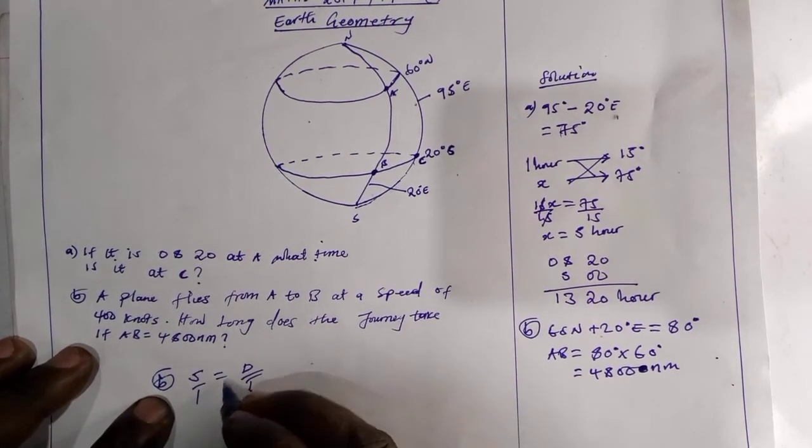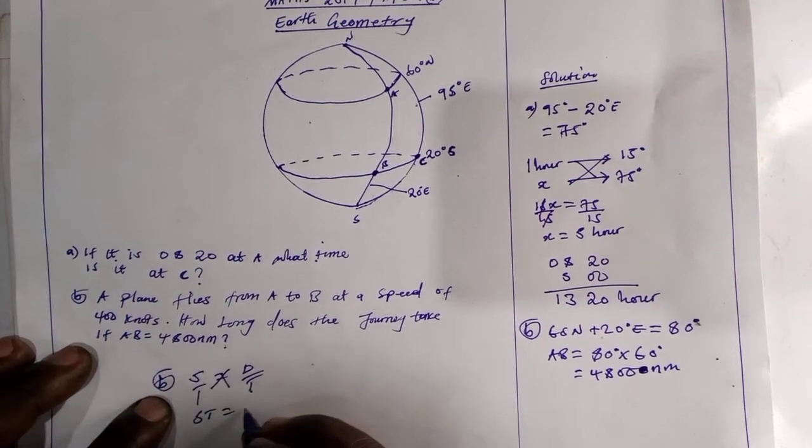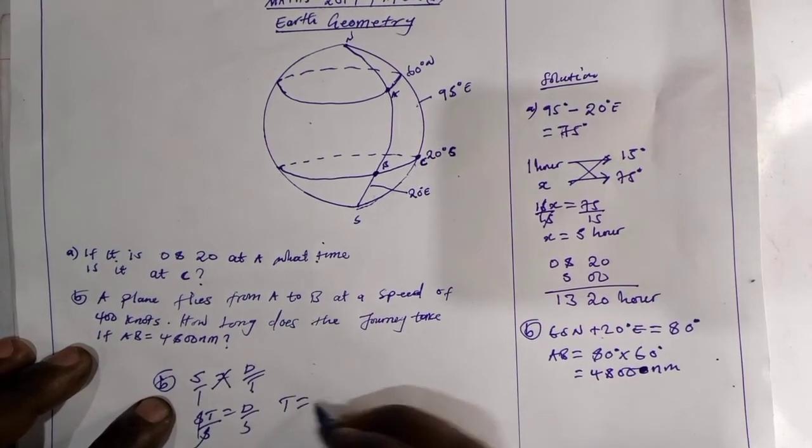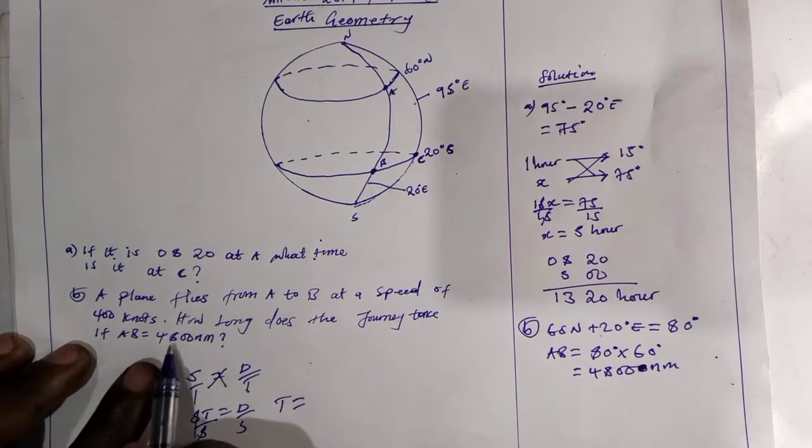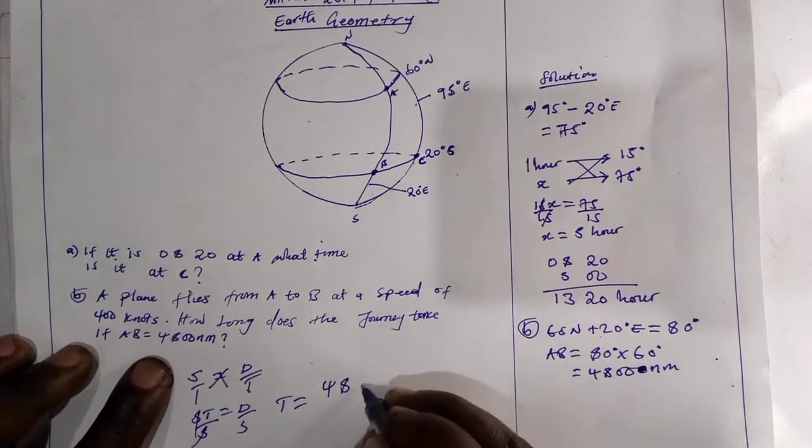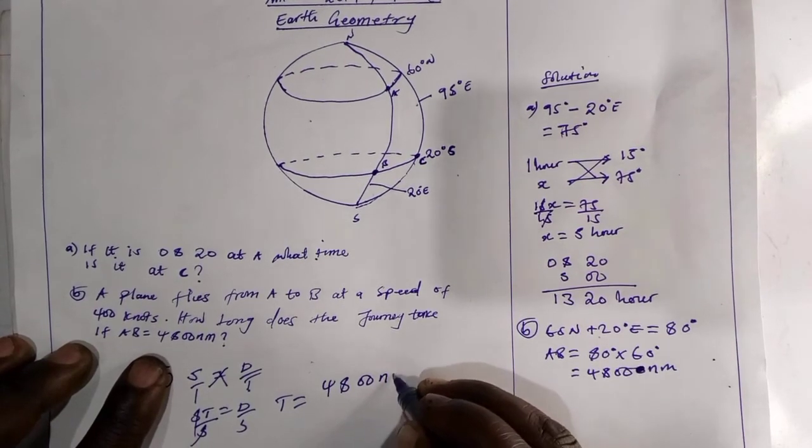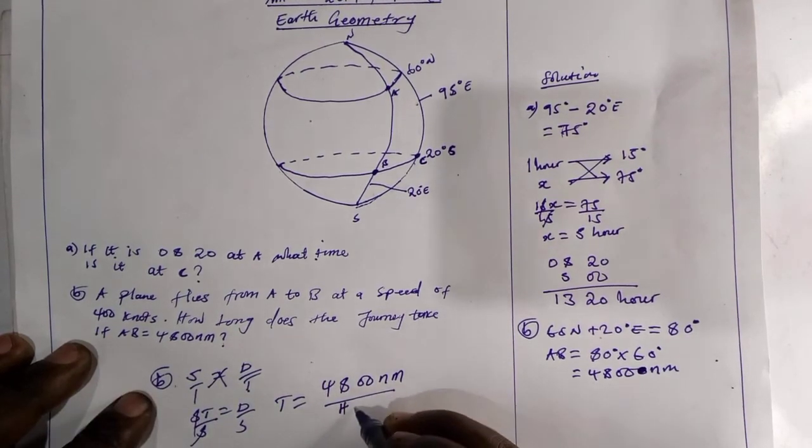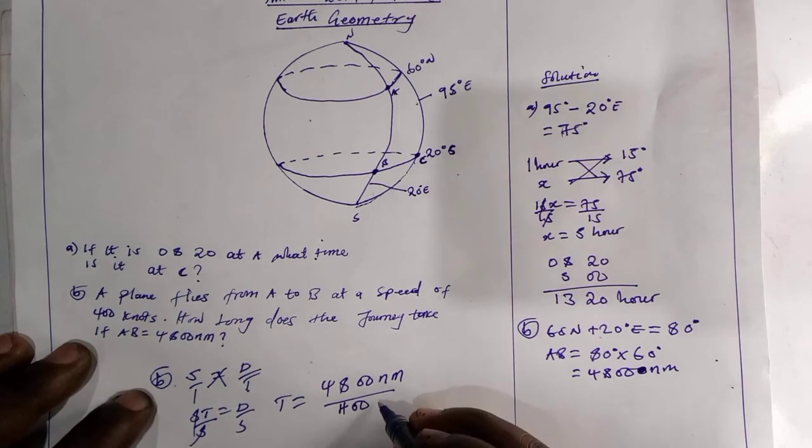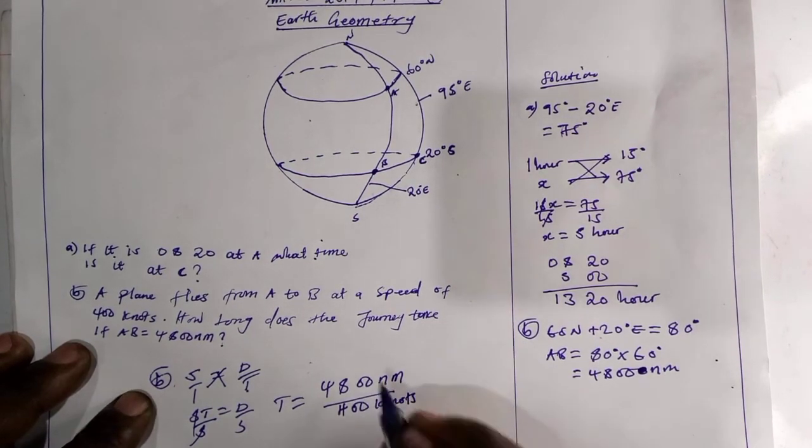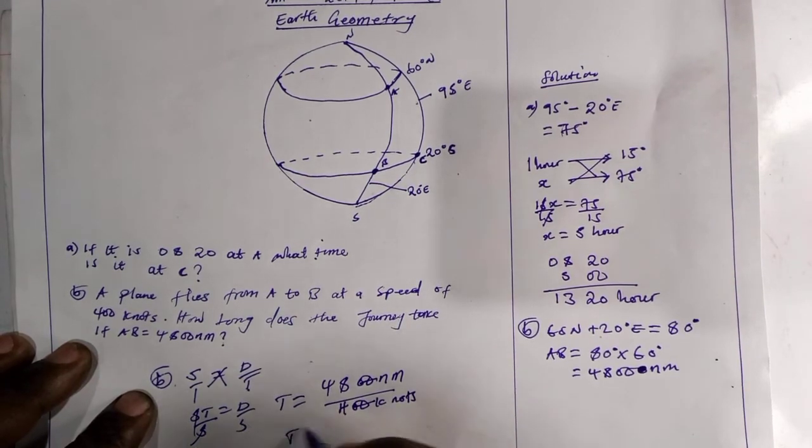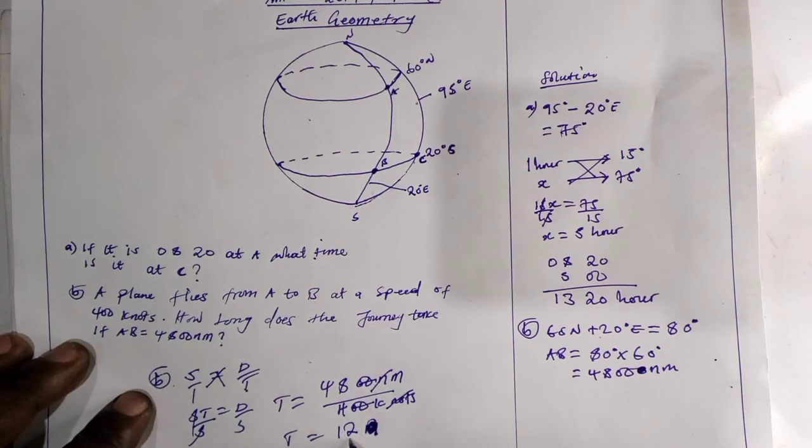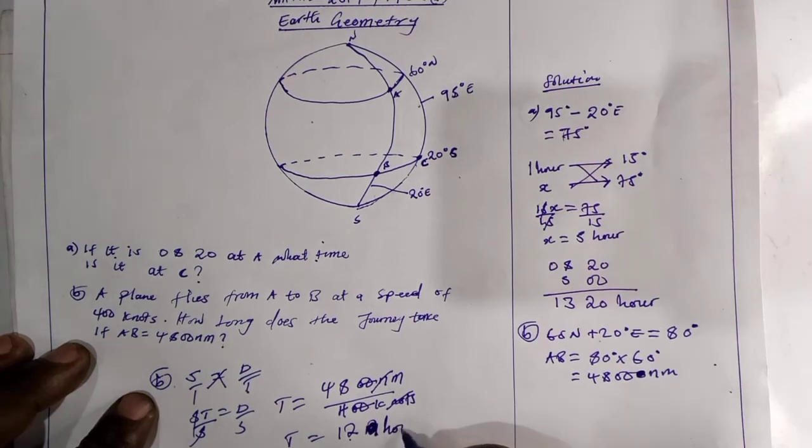So speed equals distance over time. When we make T the subject of the formula, we are going to cross multiply, we have ST equals D. Then you divide by S, in which T will be equals to D, we have 4800 knots, divided by speed, we have 400 knots, in which we are going to divide 4 into 48, it will be 12. You are going to have 12, which is 12 hours.